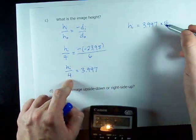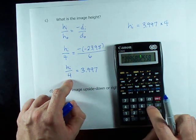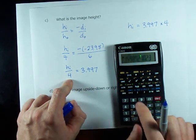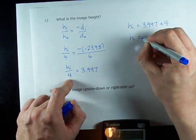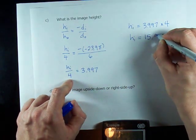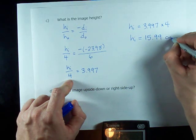Remember, you undo division with multiplication. And so, I'll times 4, and I get 15.99.